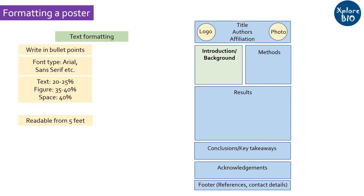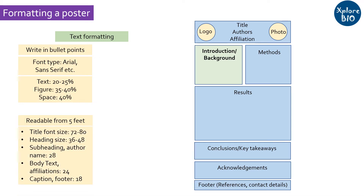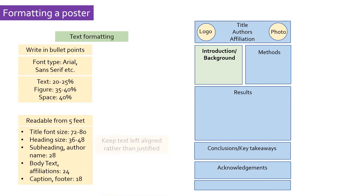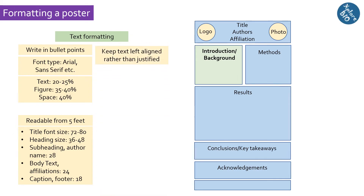Unless specified, the font size of the title should be in the range of 72 to 80 points, as the title is the first thing that draws attention. Headings can be 36 to 48 points, subheadings and author names can be 28 points, body text and affiliations can be 24 points, and captions, footnotes, and content details can be 18 points. Keep the text left-aligned rather than justified, as justified text creates unnecessary spacing between words.